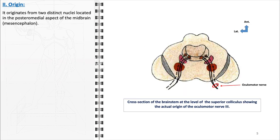The oculomotor nerve's complexity is further elucidated by its origin from two distinct nuclei located in the posteromedial aspect of the midbrain, also known as the mesencephalon. These nuclei are the oculomotor nucleus and the accessory parasympathetic nucleus, each contributing different types of fibers essential for the nerve's multifaceted functions.